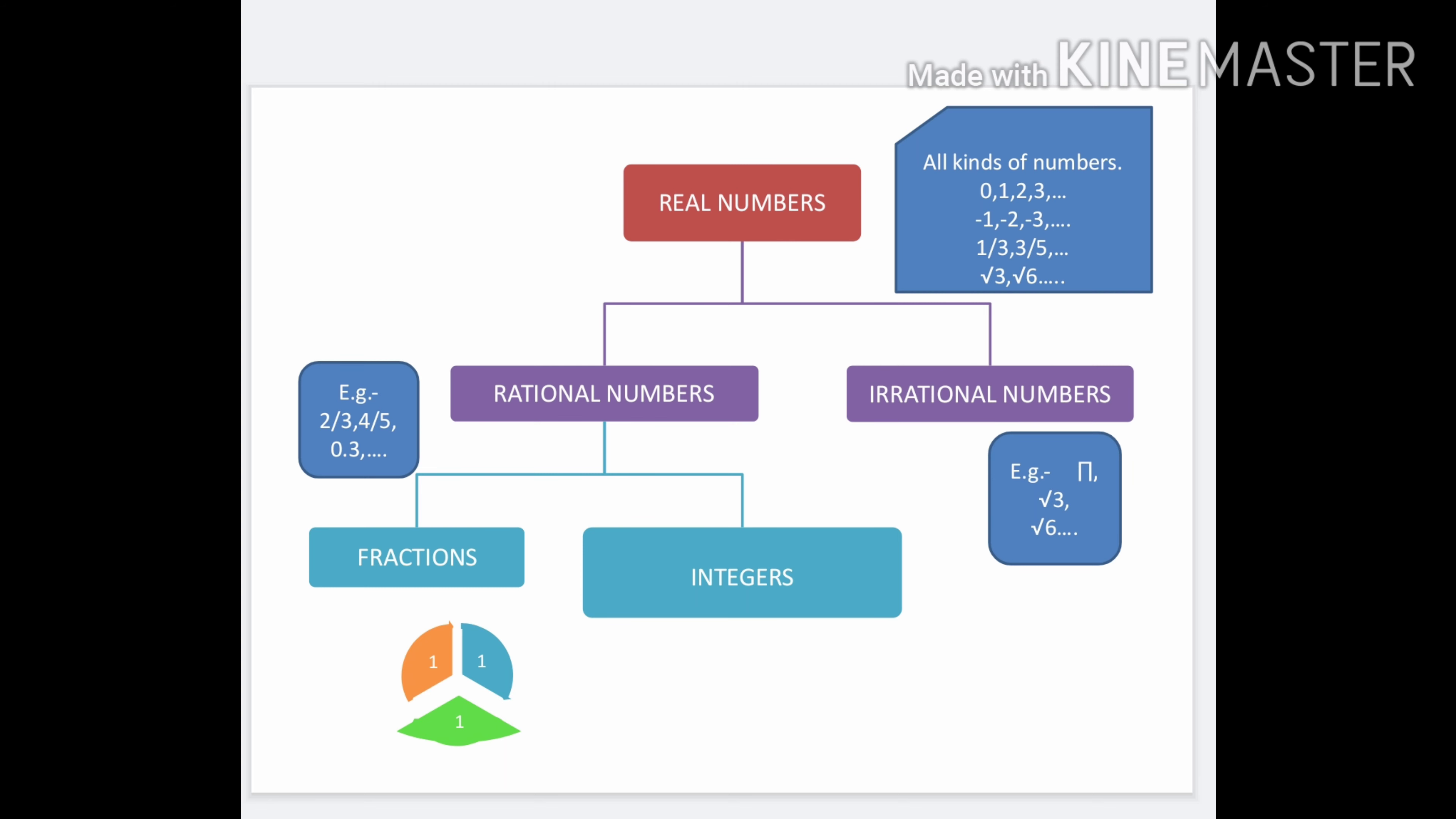Rational numbers are classified into two types: fractions and integers.